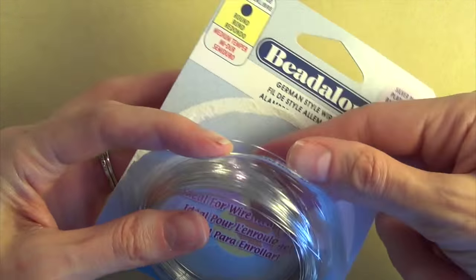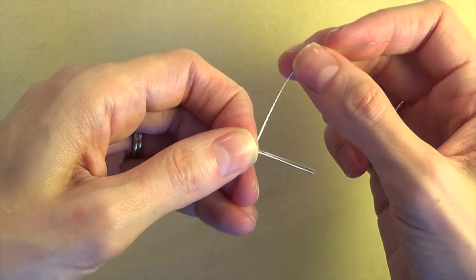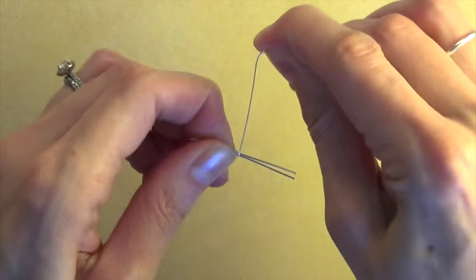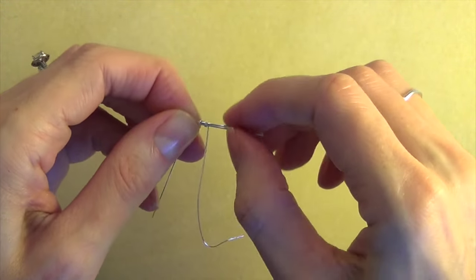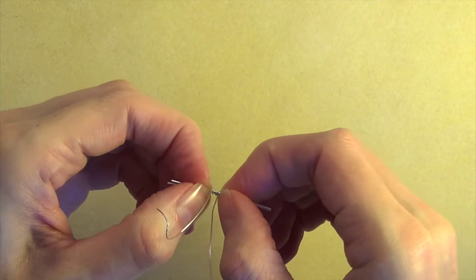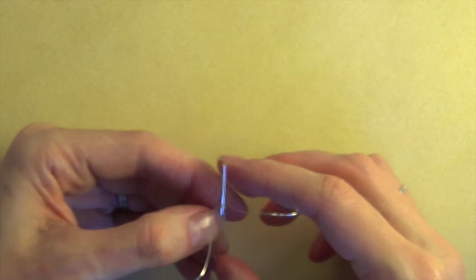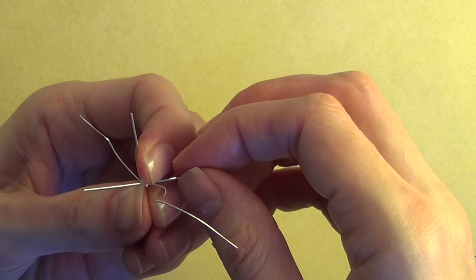Now I'm going to take some 26 gauge wire about a four inch piece and I'm going to wrap it around two of the pieces of wire that we cut from the 22 gauge right in the middle. Just going to bundle those together and then we want to spread these two pieces apart like this so they form an X shape.